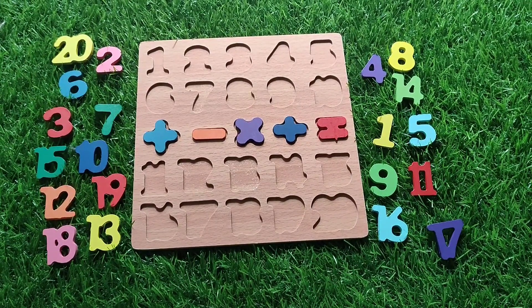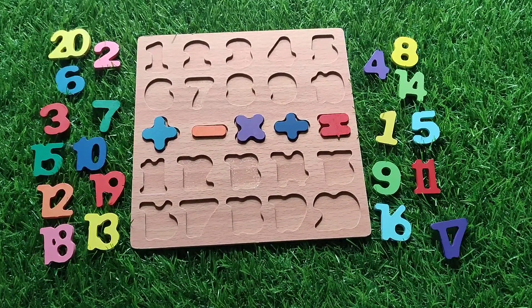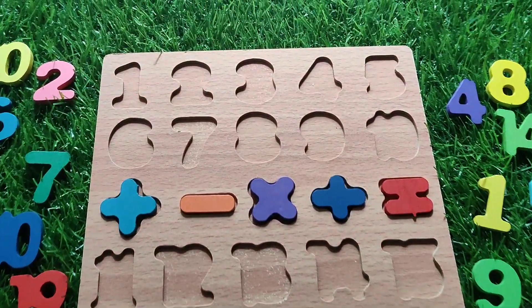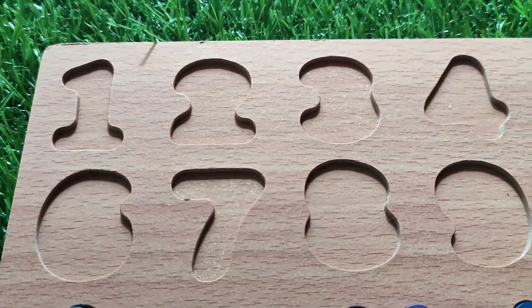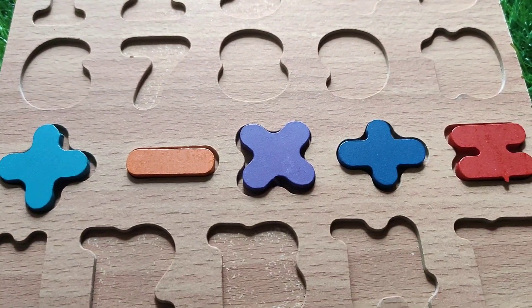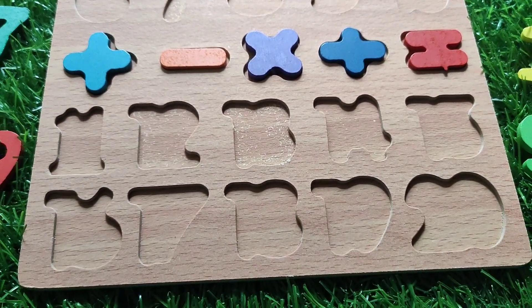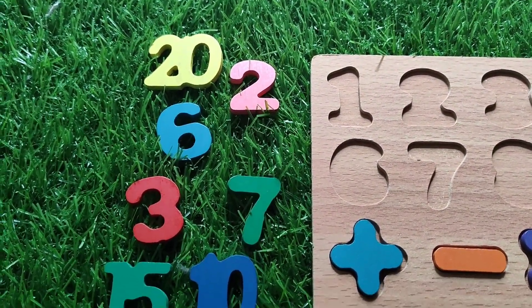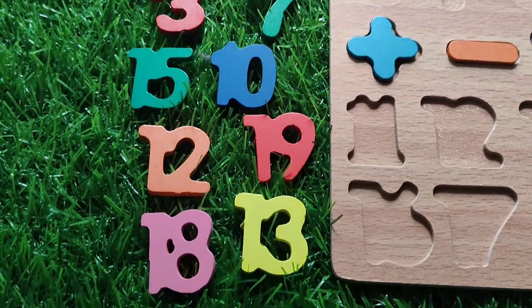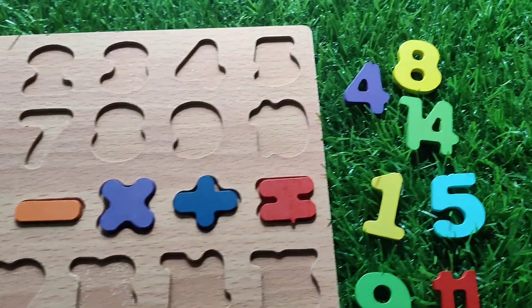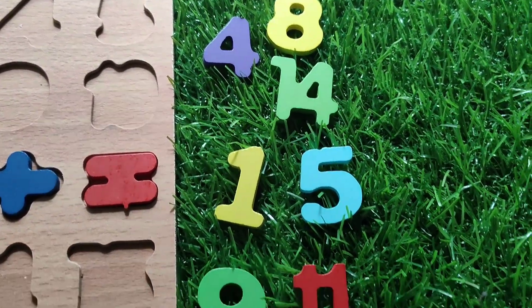Hi kids, today in this video we will learn numerical numbers with different colors. This is the pattern 1 to 20 and this is the symbols. These are the few numbers in the same pattern, and we have this right side also with a few numbers.